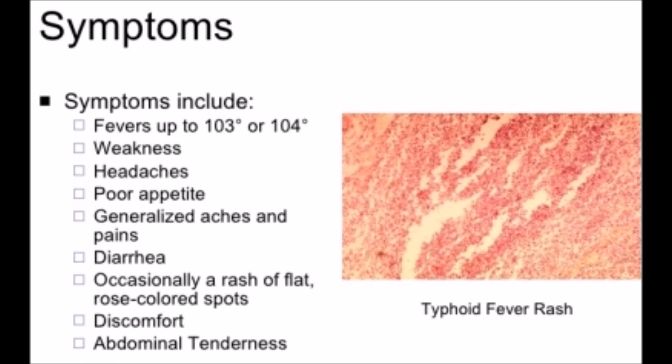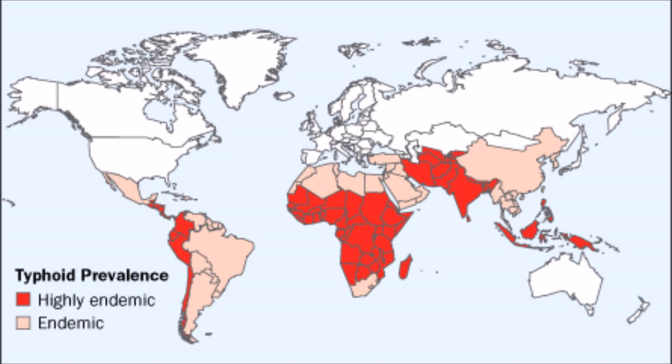The symptoms seen in these two diseases are almost the same, and the severity of salmonella paratyphi — the one that causes paratyphoid fever — is not as high as the one that causes typhoid fever. Typhoid fever is a really dangerous infection, and it occurs in underdeveloped regions of the world, in areas with poor sanitary conditions and improper handling of food and water.